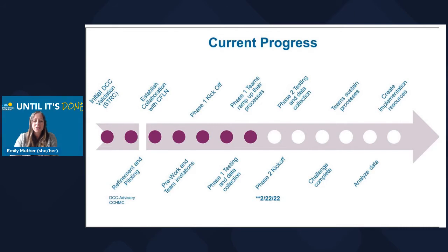This timeline shows the various stages of the project from validation, to testing use and collecting data, to ultimately analyzing the data to better inform how this can be most useful. This is a nice reminder of the many steps that all different types of research projects go through to ensure information is accurate and meaningful. The ultimate goal for the Daily Care Check-in is that it be available widely in CF centers across the country, hopefully in the fall of 2022.